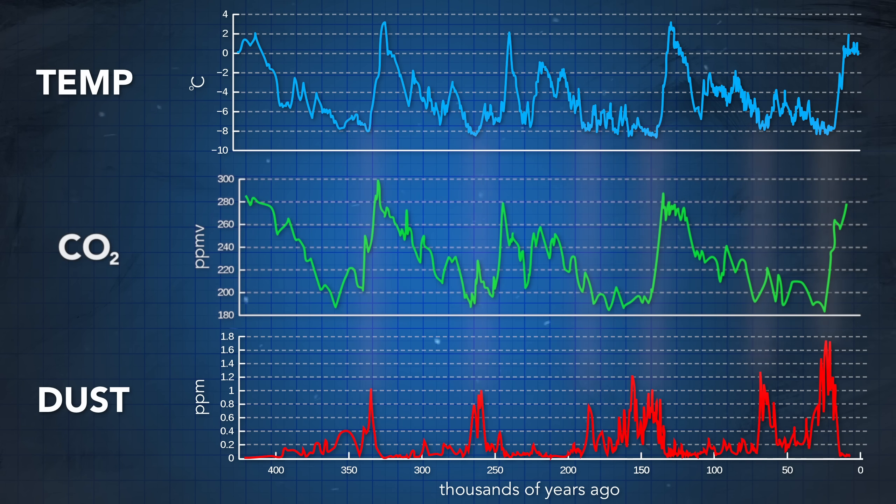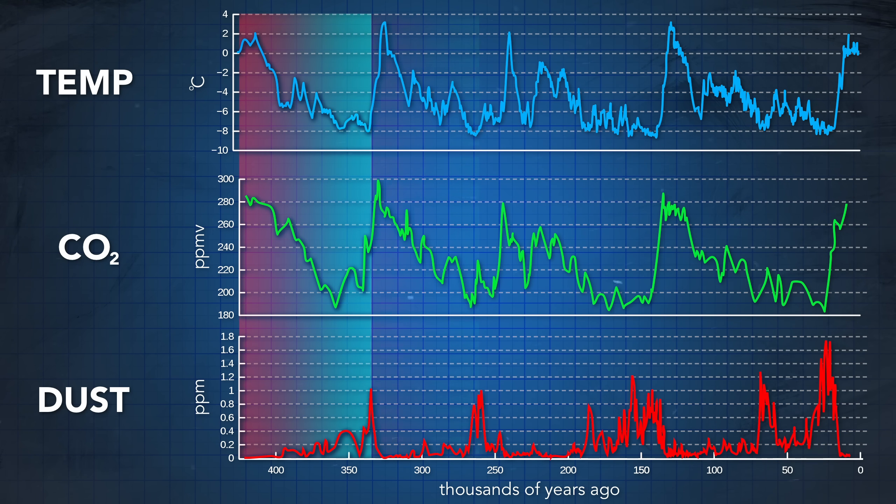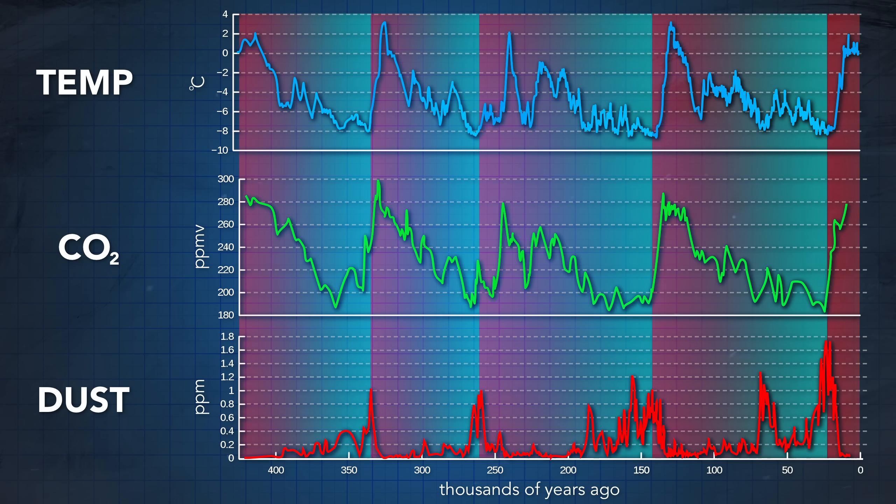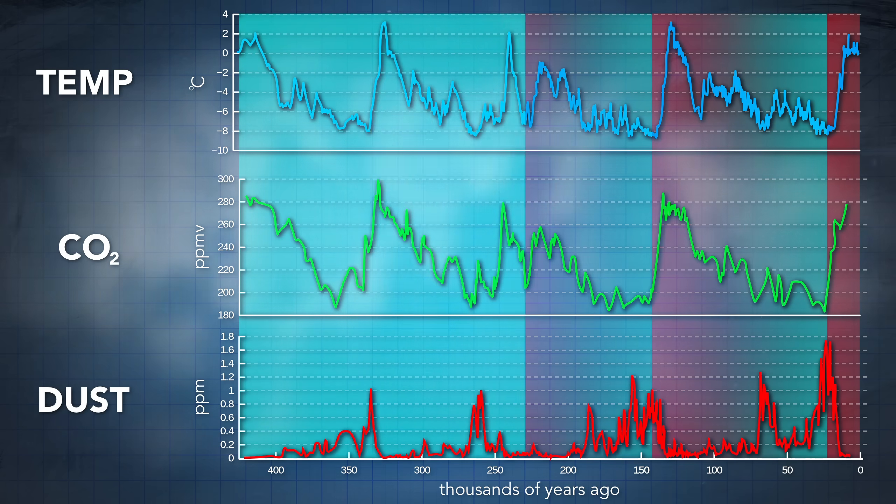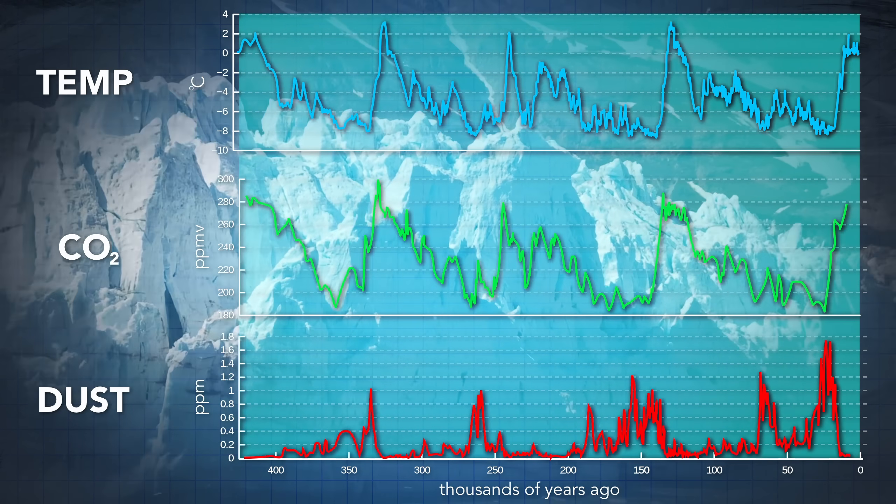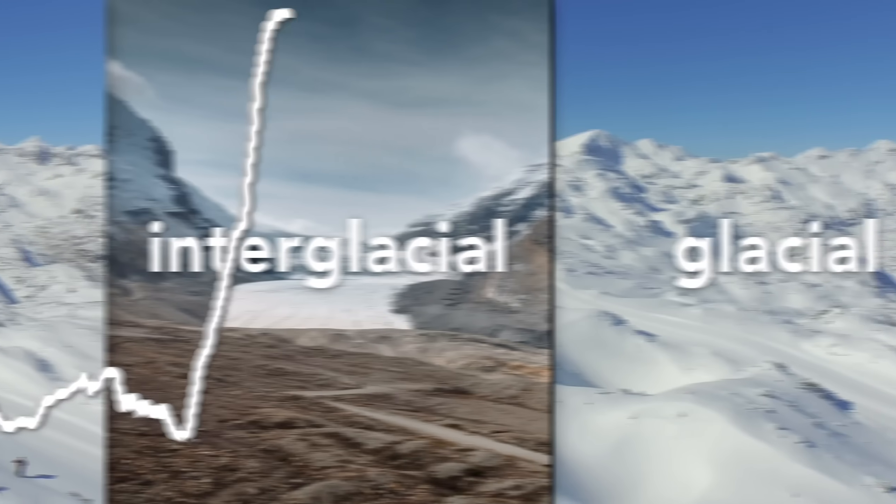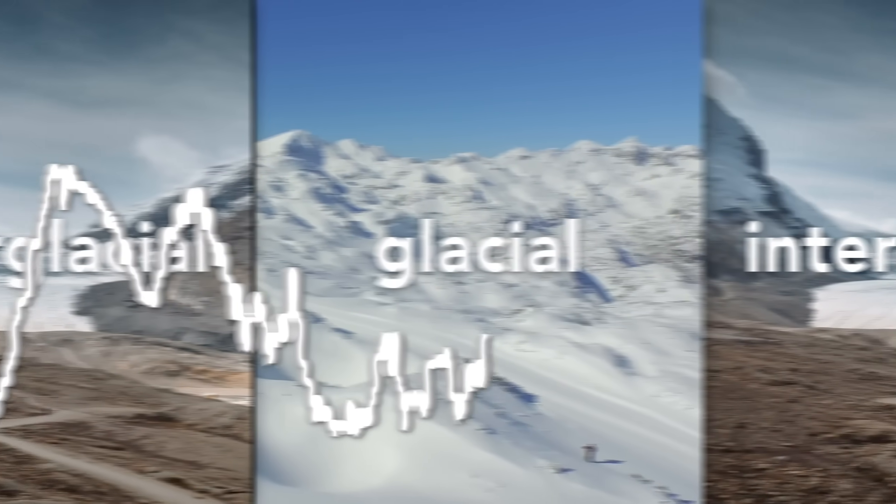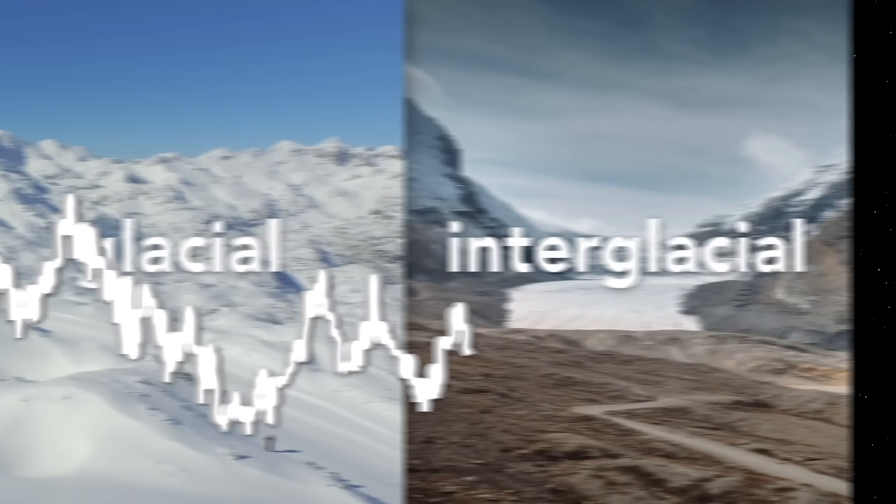But what I really wanted to use this graph to explain was the cycle of colder temperatures followed by relatively warmer ones, all during an overall ice age. These cycles are what's known as glacial-interglacial, and it's likely that all previous ice ages experienced similar patterns to these.